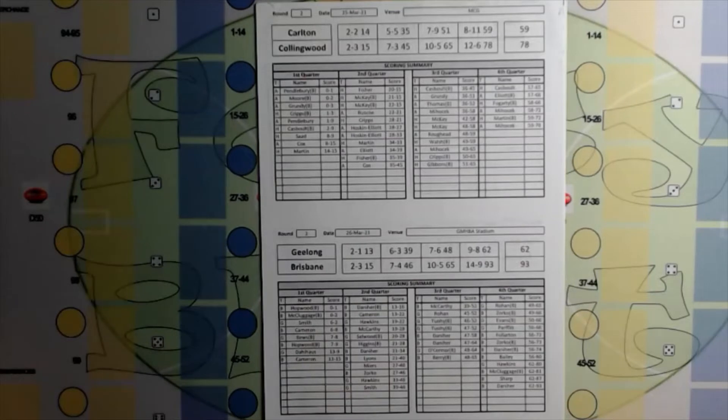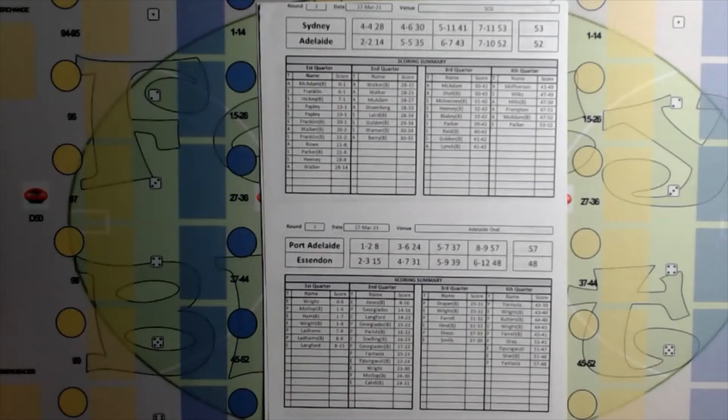So round two of the 2021 AFL season is in the books, and the results from this round: Carlton 8.11.59, Collingwood 12.6.78. Geelong 9.8.62, Brisbane 14.9.93. Sydney 7.11.53, Adelaide 7.10.52. Port Adelaide 8.9.57, Essendon 6.12.48.